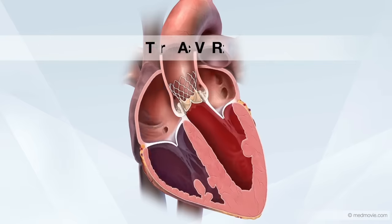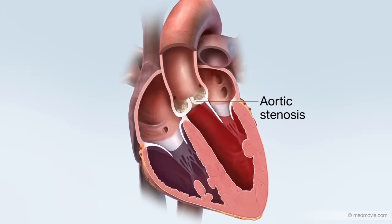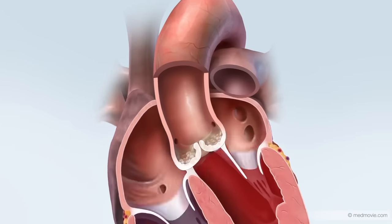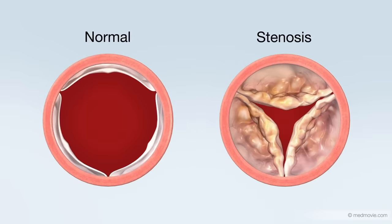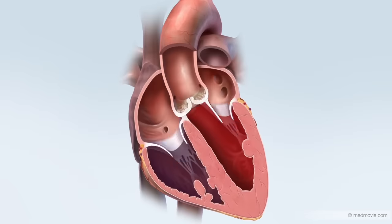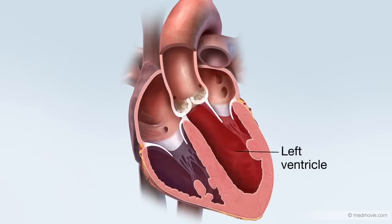Transcatheter aortic valve replacement, or TAVR, is a treatment for aortic valve stenosis, which is a narrowing of the aortic valve. The stenosis is caused by valve leaflets that are thickened, or calcified, and fused. The view from above shows the valve opening is smaller than normal. The diseased leaflets cannot move correctly, resulting in poor blood flow through the valve and causing pressure to build in the left ventricle.